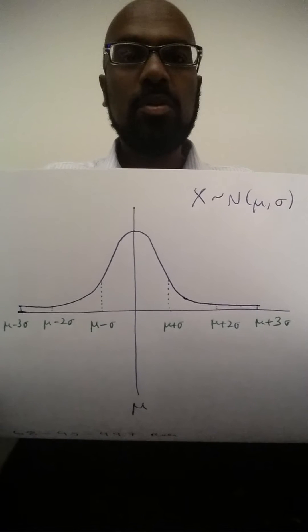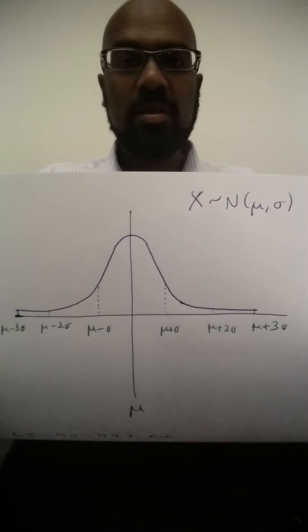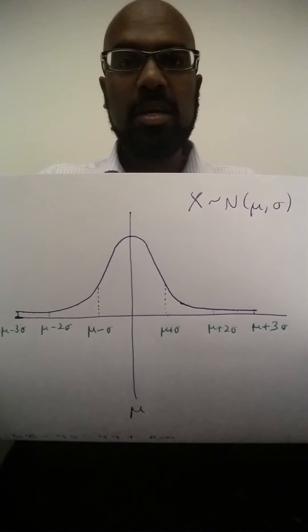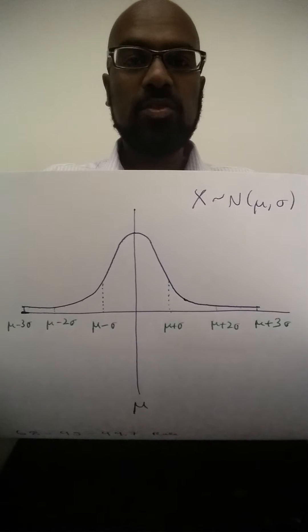A typical example of something that's normally distributed is final exam grades in a course with a lot of students in it.